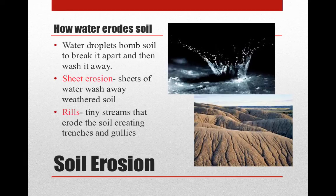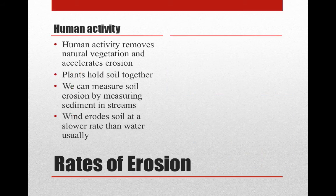Water isn't the only cause of soil erosion. Human activities like removing natural vegetation, farming, logging, and construction also heavily erode soil. These activities move trees and disrupt the natural state of the earth, leaving weathered and torn-up ground easily eroded. Plants hold soil together, so removing them eliminates the natural solidifiers that keep soil in place.